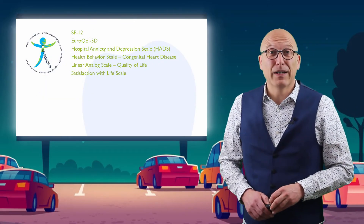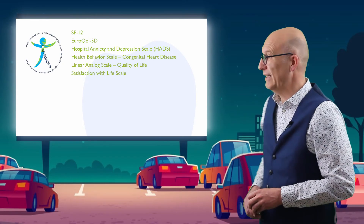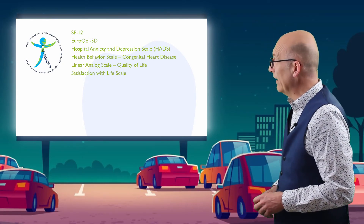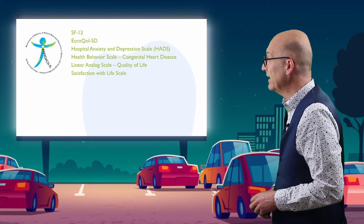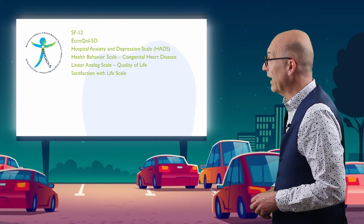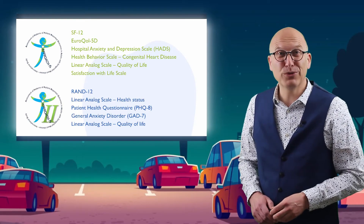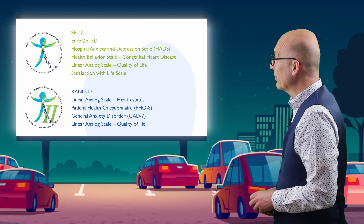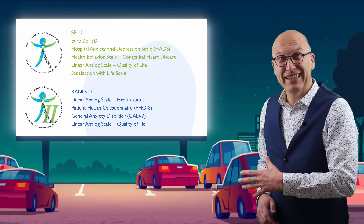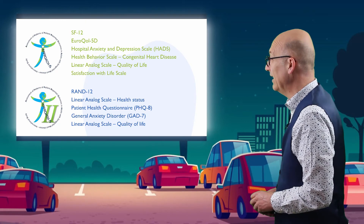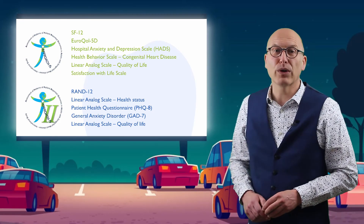Approach IS — you have probably heard about it — is an international study on patient-reported outcomes in adults with congenital heart disease. Approach IS used the SF-12, EQ-5D five dimensions, Hospital Anxiety and Depression Scale, Health Behavior Congenital Heart Disease Scale, Linear Analog Scale for quality of life, and the Satisfaction with Life Scale. In the subsequent Approach IS-2 study, the main outcome measures were the RAND-12, Linear Analog Scale for health status, Patient Health Questionnaire and Generalized Anxiety Disorder questionnaire for anxiety and depression, and a Linear Analog Scale for quality of life.